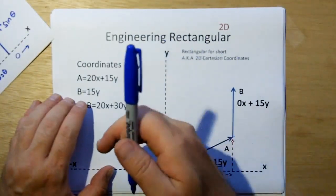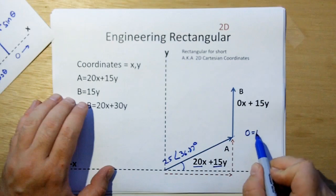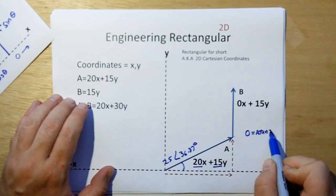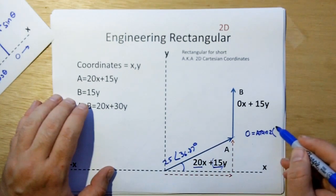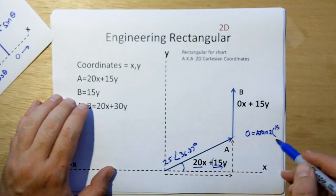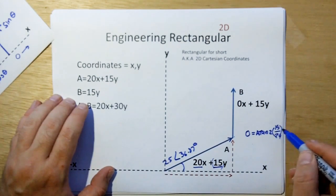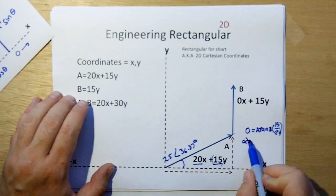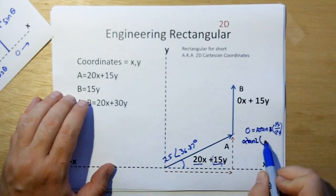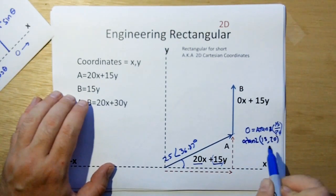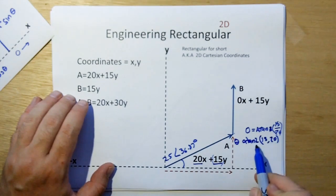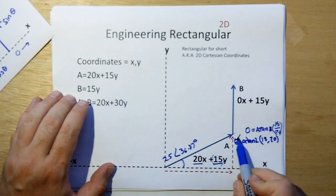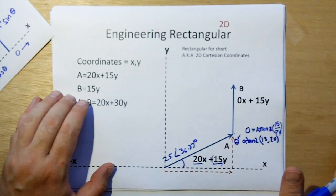To go from rectangular back to polar, theta equals the arctan2 of the y-component over the x-component — 15 over 20 in this case. If you use Excel, the arguments are reversed: it wants x first, then y. Also, Excel gives you the angle in radians, not degrees. We're talking about degrees here. Radians are a different form of angle measurement, which you should be familiar with from high school geometry and trigonometry.